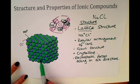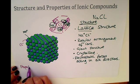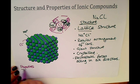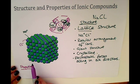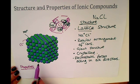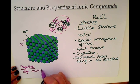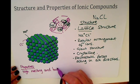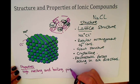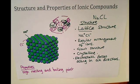This means that there are very strong bonds between the ions, keeping them together in that lattice structure. As for the properties of ionic compounds — because of these electrostatic forces acting in all directions, it means it's very difficult to break the ionic bonds apart. You'd need a lot of energy input to break these bonds apart, which means it has a high melting and boiling point.